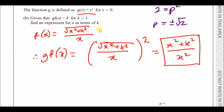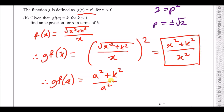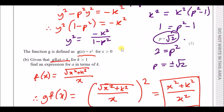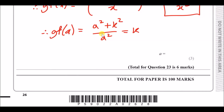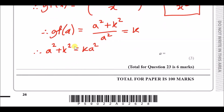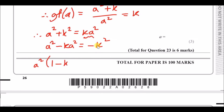Now set gf(a) equal to k: a squared plus k squared over a squared equals k. Multiply by a squared: a squared plus k squared equals k times a squared. Move all a terms to the left: a squared minus k times a squared equals minus k squared. Factorize: a squared times (1 minus k) equals minus k squared. Divide by (1 minus k): a squared equals minus k squared over (1 minus k).